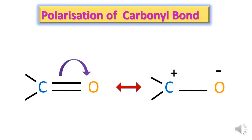So here, carbon is the electron-deficient center and oxygen is the electron-rich center. These are the two resonance structures of the carbonyl bond. The electron pair present on the oxygen can be shared between carbon and oxygen, and we get back the carbonyl bond.